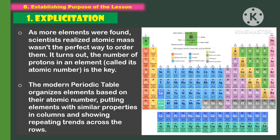As more elements were found, scientists realized atomic mass was not the perfect way to order them. It turns out the number of protons in an element, called its atomic number, is the key. The modern periodic table organizes elements based on their atomic number, putting elements with similar properties in columns and showing repeating trends across the rows.